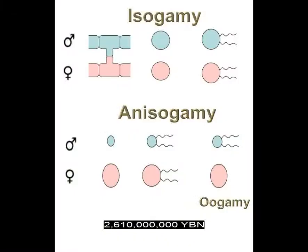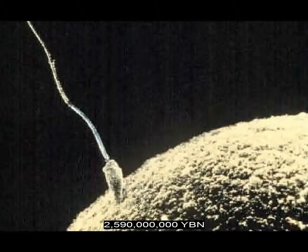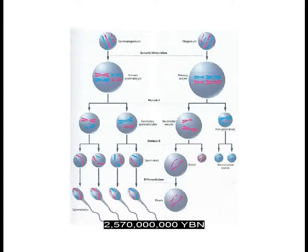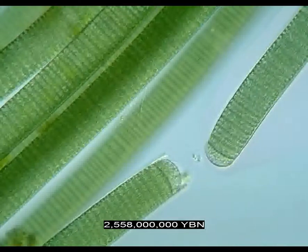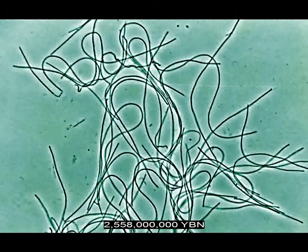Gender in eukaryotes evolves: anisogamy — sex cell and nucleus fusion between two cells that are different in size or shape. Oogamy, a form of anisogamy, evolves in protists — sex between a flagellated gamete and an unflagellated gamete. Two-step meiosis: diploid DNA copies and then the cell divides twice into four haploid cells. Eubacteria Deinococcus-Thermus. Eubacteria Cyanobacteria, ancestor of all plastids. Eubacteria Chloroflexi — green non-sulfur bacteria.